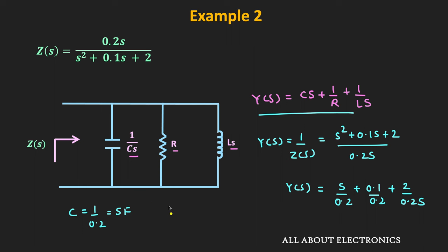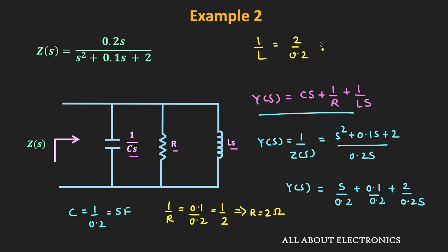Similarly, 1/R equals 0.1/0.2, which is 1/2, so the value of R equals 2 Ohms. And 1/L equals 2/0.2, so the value of L equals 0.1 Henry. So for the given parallel RLC circuit, the value of C is 5 Farads, R is 2 Ohms, and L is 0.1 Henry. In this way, from the expression of the driving point impedance, we found the values of the components.